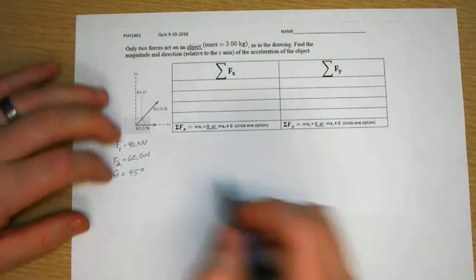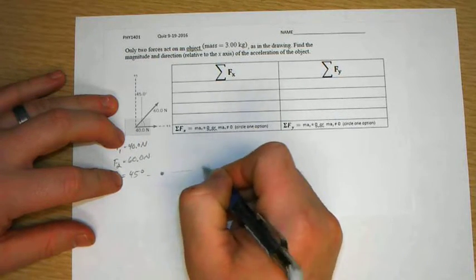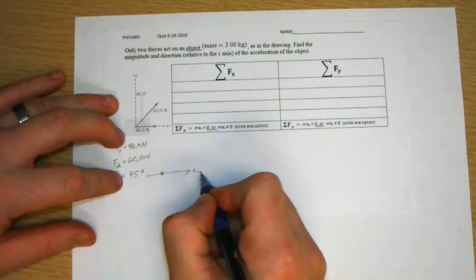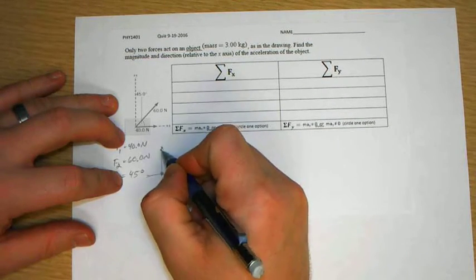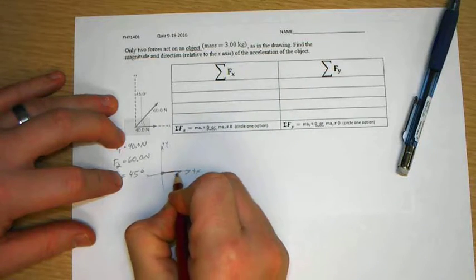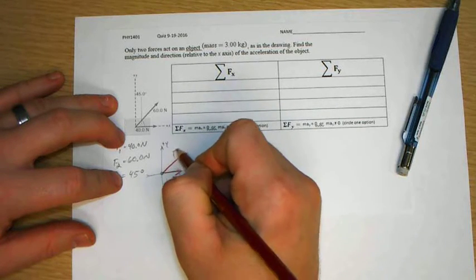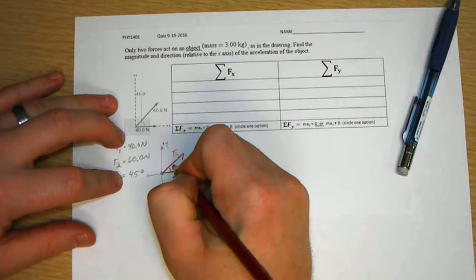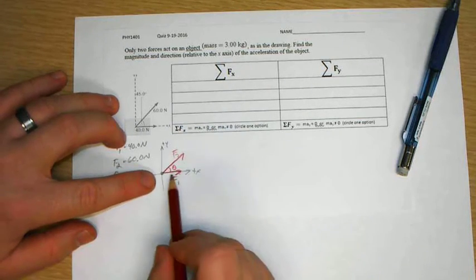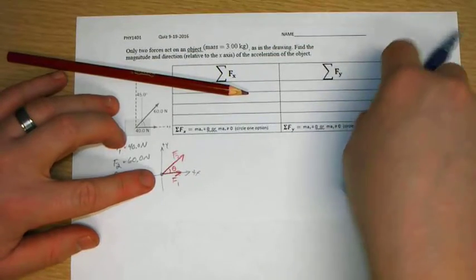First thing to do is maybe draw a free body diagram, so this is the positive x direction, positive y direction. I have F1 in this direction, F2, and theta. Why did I put the axis here? Well, I know I'm going to have to add these two forces, I want to put one on the axis already, so I know I have to deal with breaking down this F2.